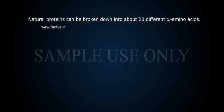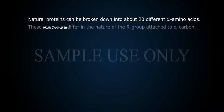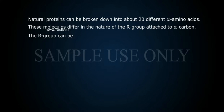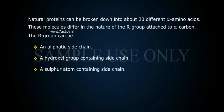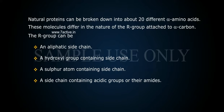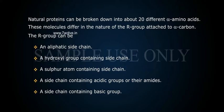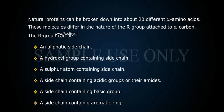Natural proteins can be broken down into about 20 different alpha amino acids. These molecules differ in the nature of the R group attached to the alpha carbon. The R group can be an aliphatic side chain, a hydroxyl group-containing side chain, a sulfur atom-containing side chain, a side chain containing acidic groups or their amides, a side chain containing a basic group, or a side chain containing an aromatic ring.